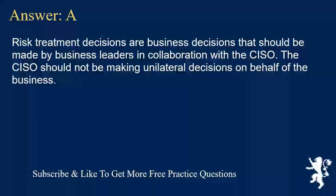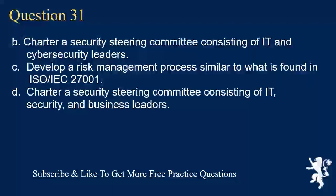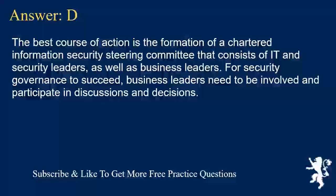Question 31. Marie, a CISO at a manufacturing company, is building a new cyber risk governance process. For this process to be successful, what is the best first step for Marie to take? A. Develop a RACI matrix that defines executive roles and responsibilities. B. Charter a security steering committee consisting of IT and cybersecurity leaders. C. Develop a risk management process similar to what is found in ISO/IEC 27001. D. Charter a security steering committee consisting of IT, security, and business leaders. Answer D. The best course of action is the formation of a chartered information security steering committee that consists of IT and security leaders, as well as business leaders. For security governance to succeed, business leaders need to be involved and participate in discussions and decisions.